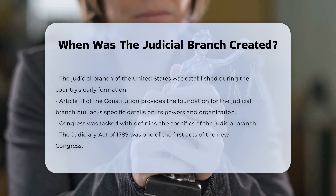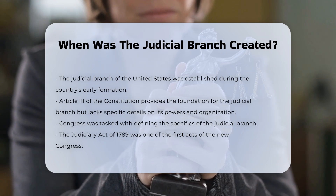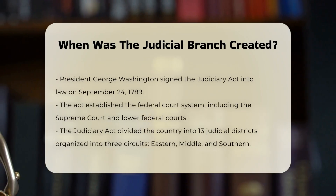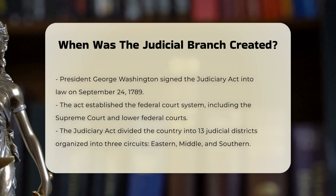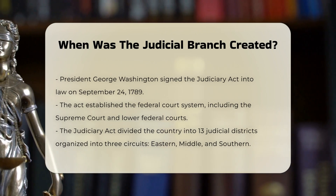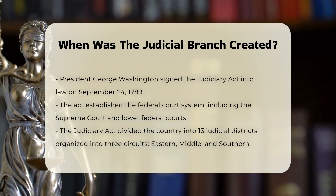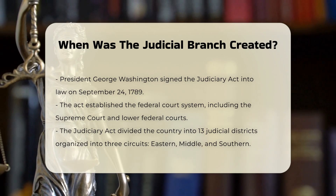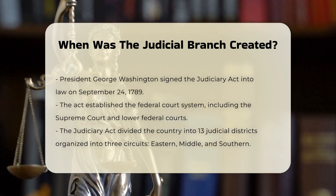One of the first acts of the new Congress was to address this gap through the Judiciary Act of 1789. This act was signed into law by President George Washington on September 24, 1789. The Judiciary Act established the federal court system, including the Supreme Court, as well as the lower federal courts such as district and circuit courts.